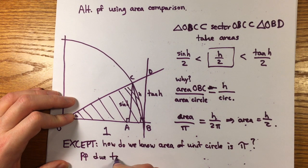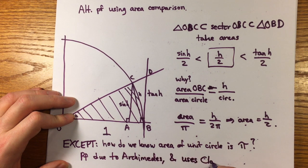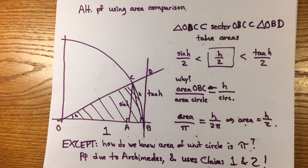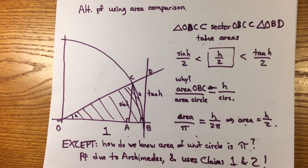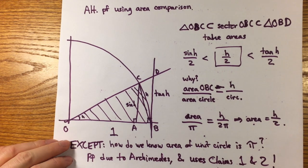This requires a proof that uses the comparison of the circumference of the circle to inscribed and circumscribed polygons. I'm not aware of any other way to establish this relationship without using the fundamental theorem of calculus and the properties of trig functions we're trying to establish in the first place.